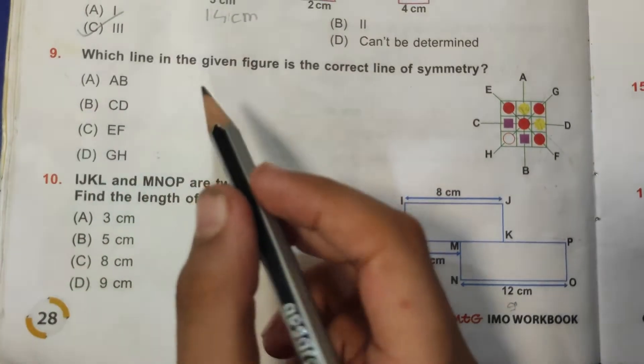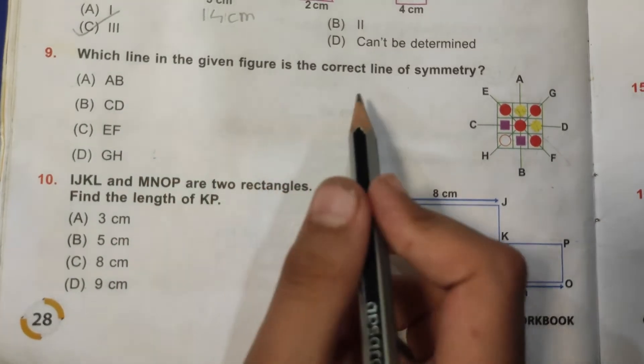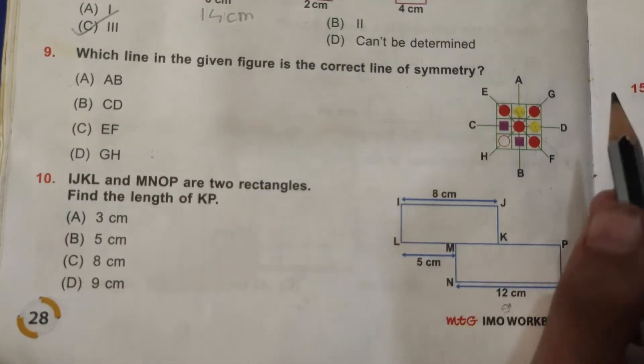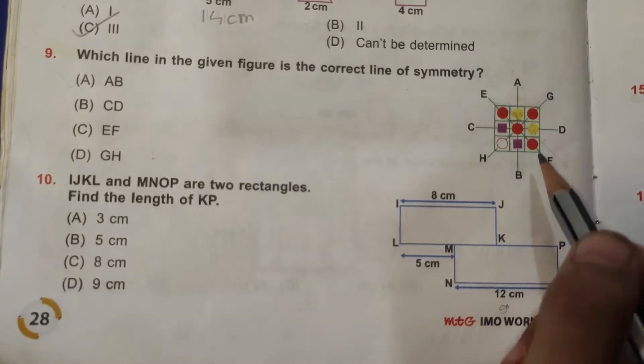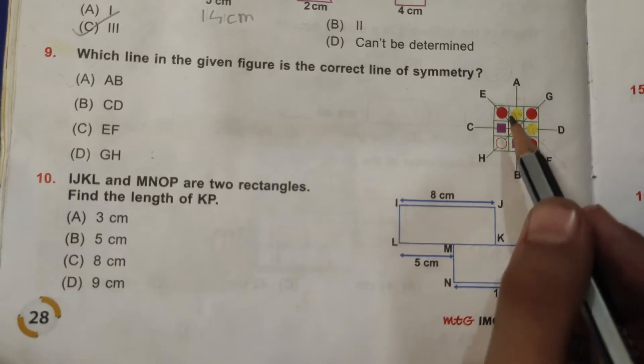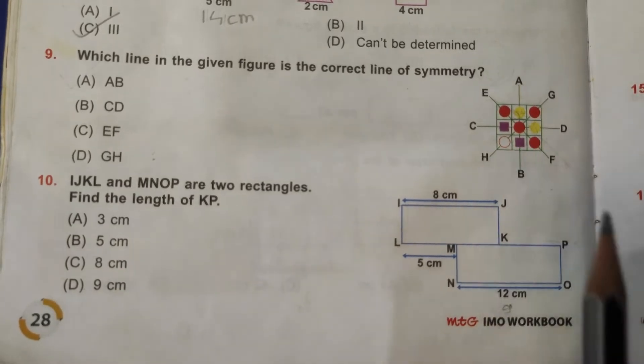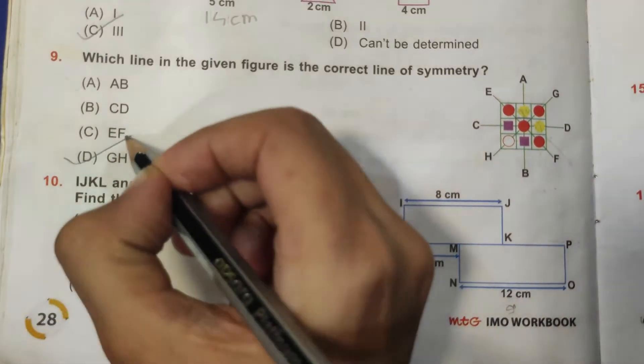Ninth question: which line in the given figure is the correct line of symmetry? So here GH. So here is red, and then yellow, yellow. And then these all lines are red, means it is also symmetrical. Purple and purple, and this white. So means GH is the correct answer.